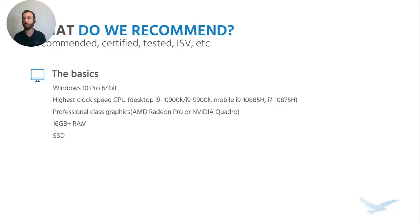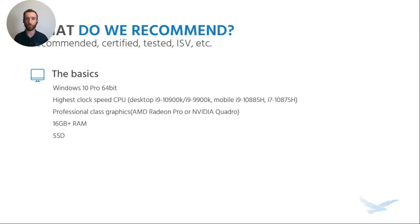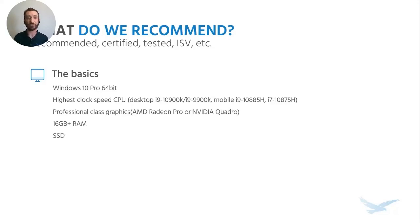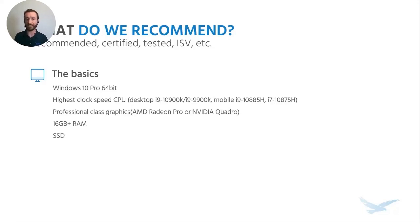When thinking about recommending or buying a computer and getting the best bang for your buck, where should you spend your money? The first thing I always recommend starting with is the processor. Right now the main recommendation is an Intel i9-10900K or i9-9900K for desktop processors. For mobile notebooks, it's the i9-10885H and i7-10875H. The reason I'm recommending those specific processors is their single-core performance.